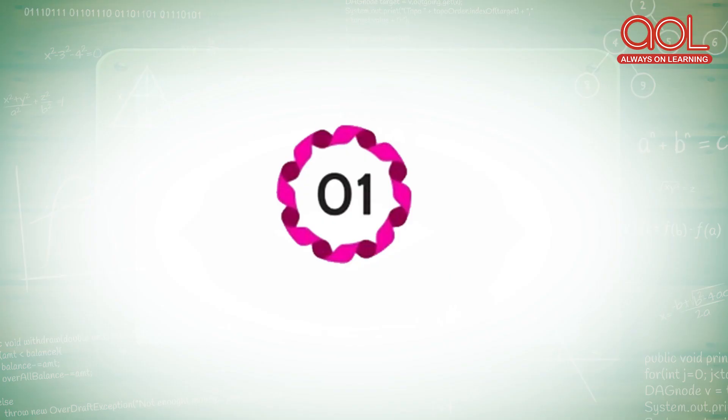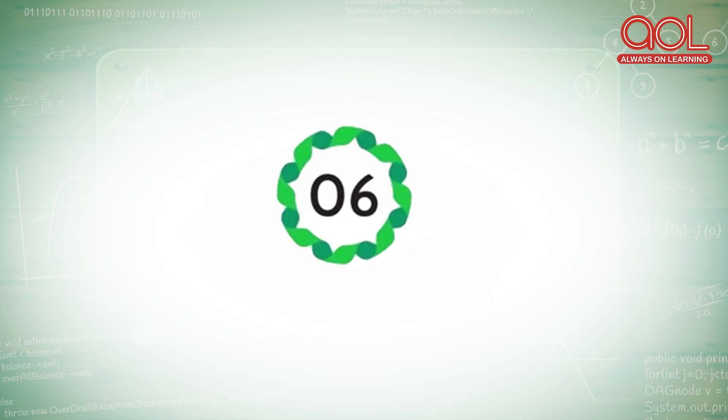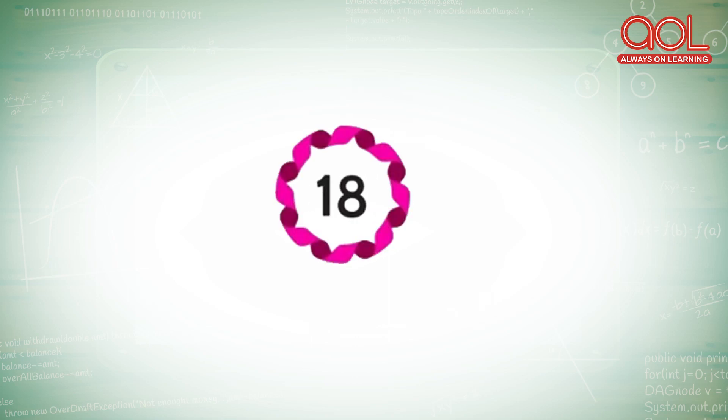So what are the factors of 18? They are 1, 2, 3, 6, 9, and 18. All these are factors of 18. I hope you enjoyed watching this video. Thank you so much.